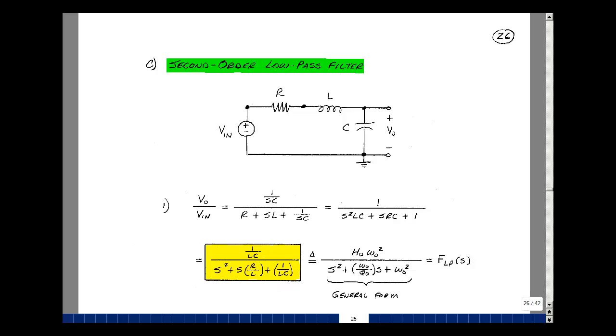Besides the 8 forms that we had, there are other combinations of the forms that have special names. This particular one is called the low-pass filter equation, and it has the general form of H naught omega naught squared over S squared plus omega naught over Q naught times S plus omega naught squared.